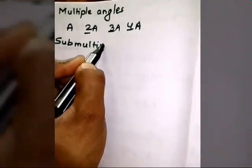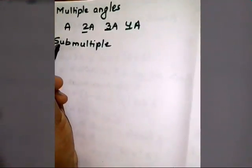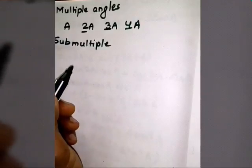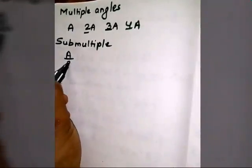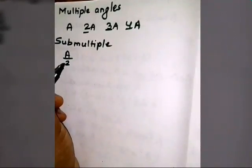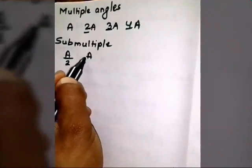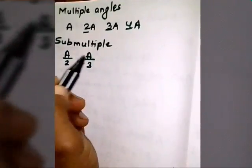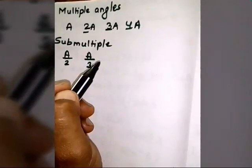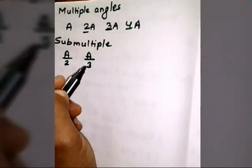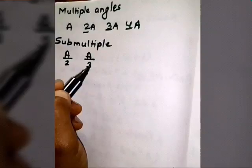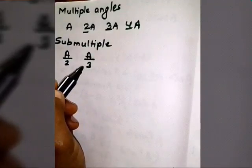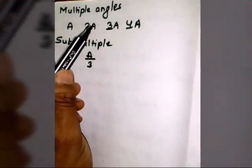The next term is sub-multiple. Sub-multiples are numbers which are greater than 0 but less than 1. For example, A divided by 2 is 0.5, and A divided by 3 is approximately 0.333. Since these are numbers greater than 0 but less than 1, we consider them sub-multiples. In the previous video we talked about angles 2A and 3A.